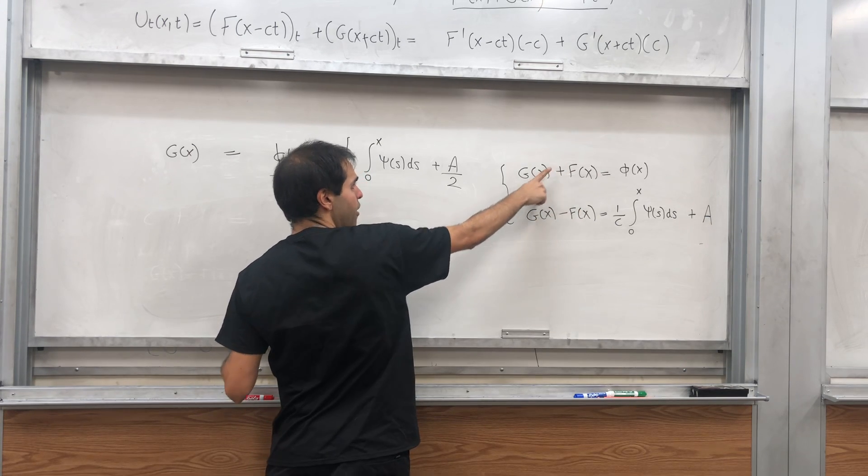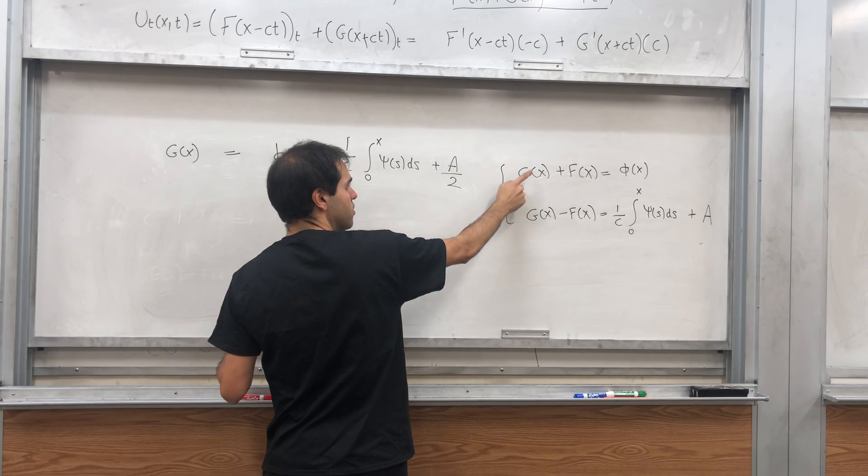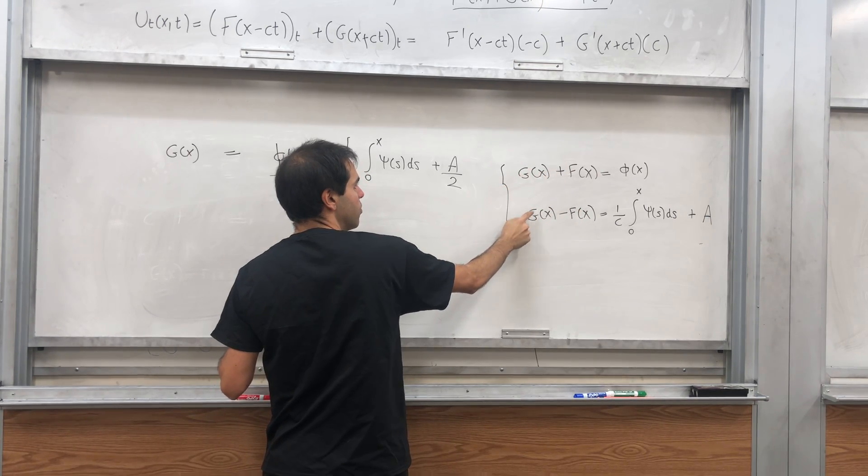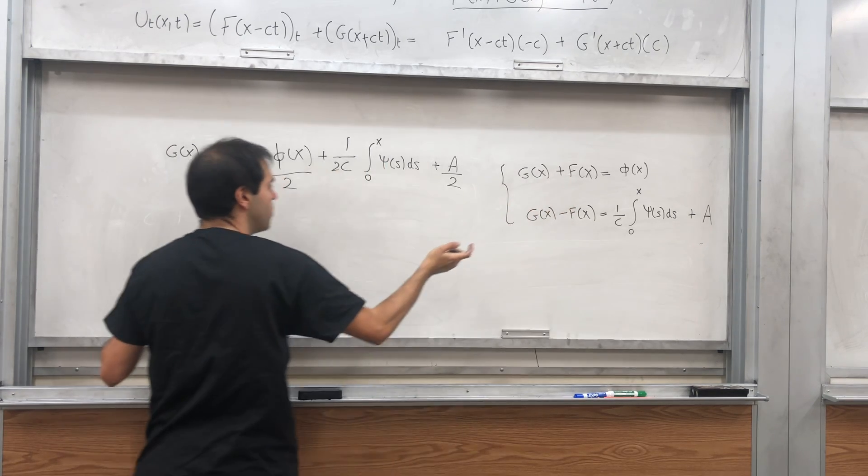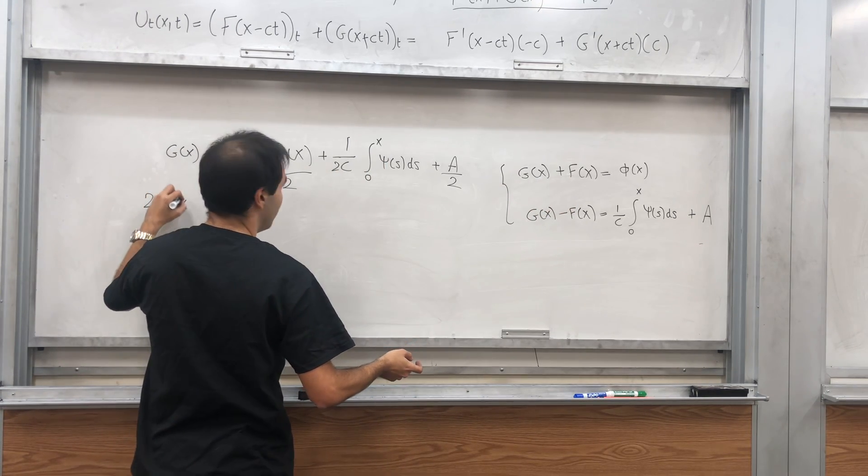And similarly for F, so subtract this from this, so this minus this, which is zero. F of x minus minus F of x, which is two over F of x.